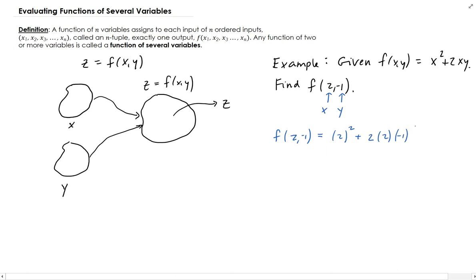So from here, we end up getting 4 minus 4, which is 0.